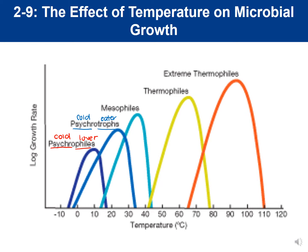Next we have mesophiles — 'meso' meaning moderate, 'phile' meaning lover — so these are moderate temperature lovers. They grow minimally at about 15°C, maximally at about 45°C, and optimally around human body temperature, best at 37°C. A mesophile would grow at room temperature (~25°C), at human body temperature (~37–38°C), and possibly at 42°C as well.